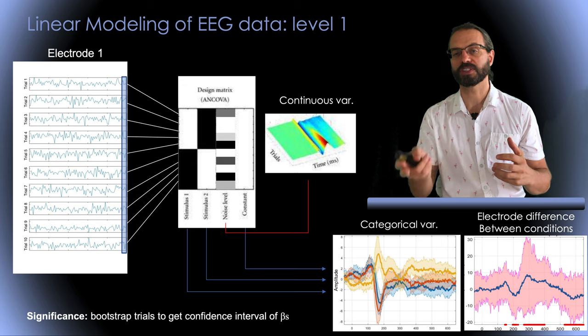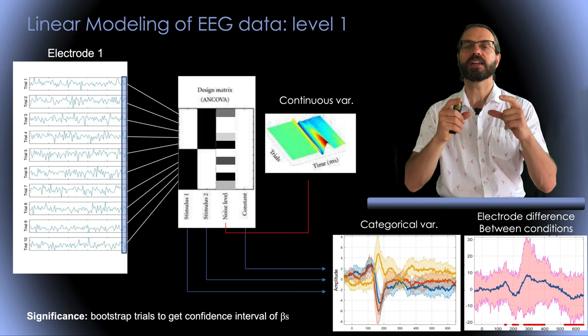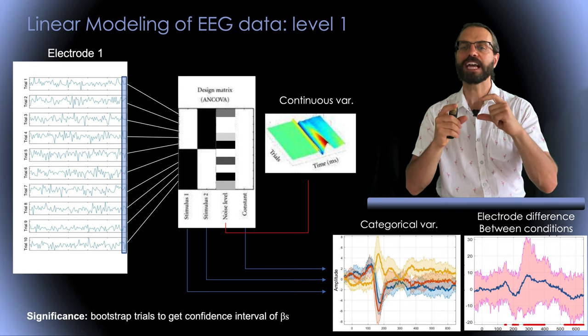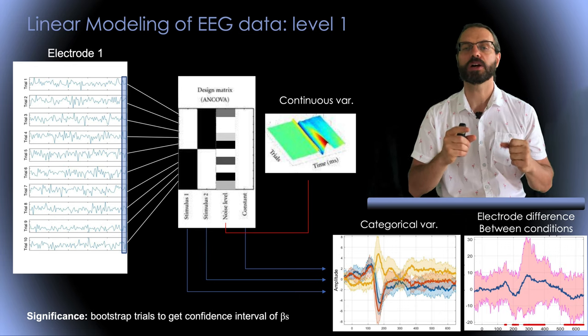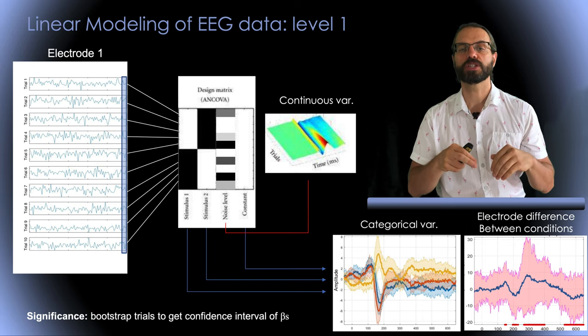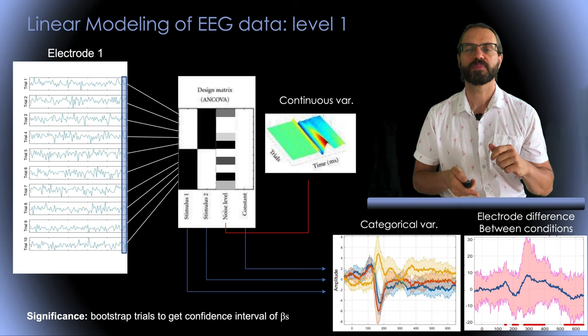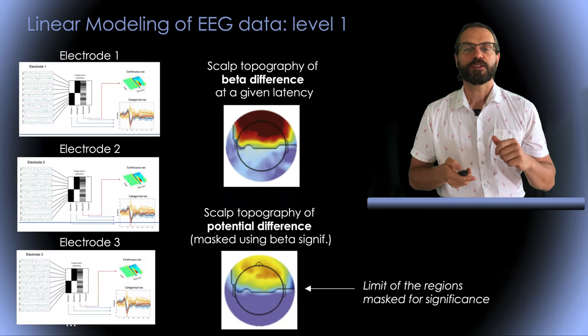To calculate the 95% confidence interval of the difference, we could use parametric statistics, but we usually use bootstrap where we repetitively take a subsample of trial and we compute the model to determine how the beta parameters are affected. I put a link in the description on the lecture on confidence interval, bootstrap, and statistics.